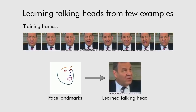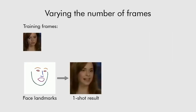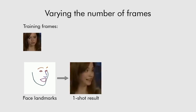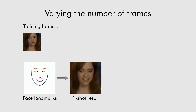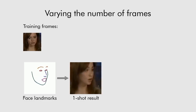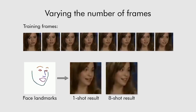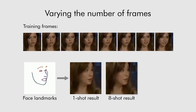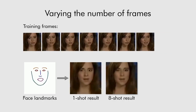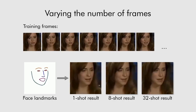Our system can learn from different numbers of frames. One-shot learning from a single frame is possible. Of course, increasing the number of frames leads to head models of higher realism and to better identity preservation.